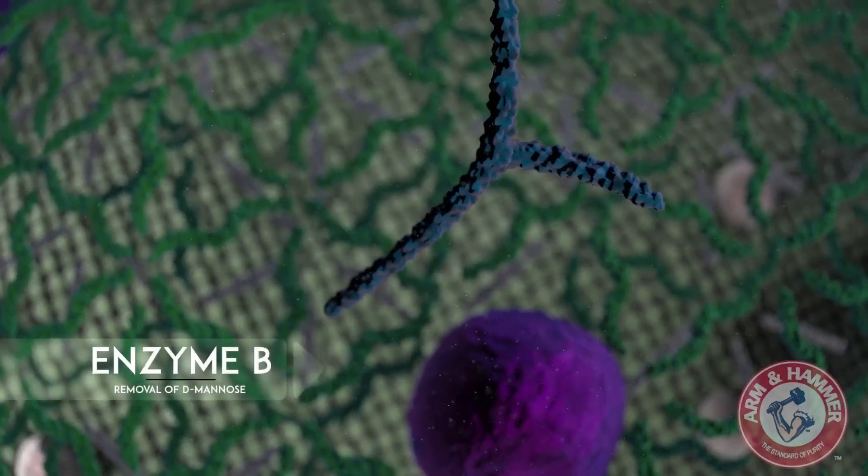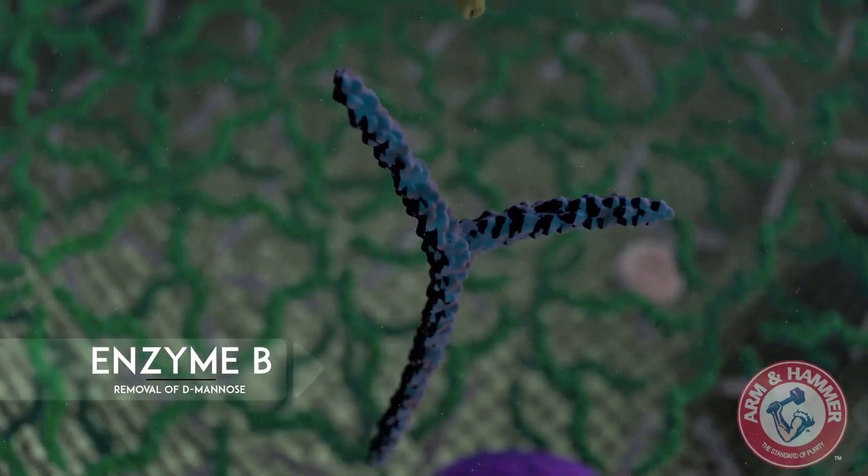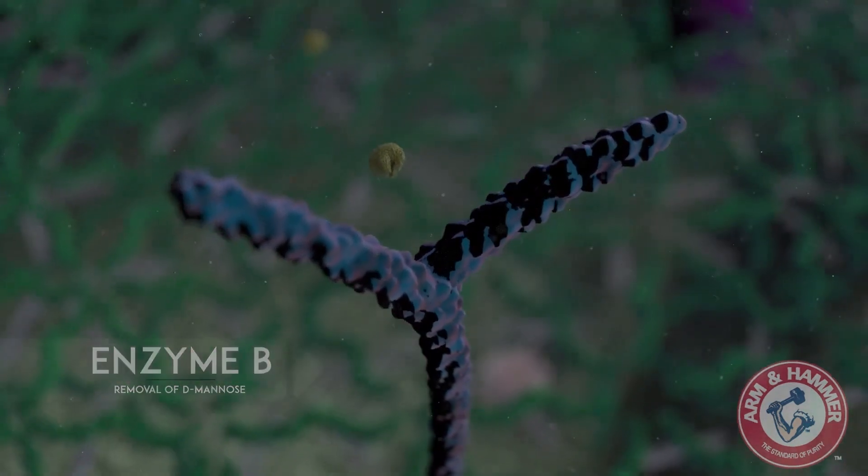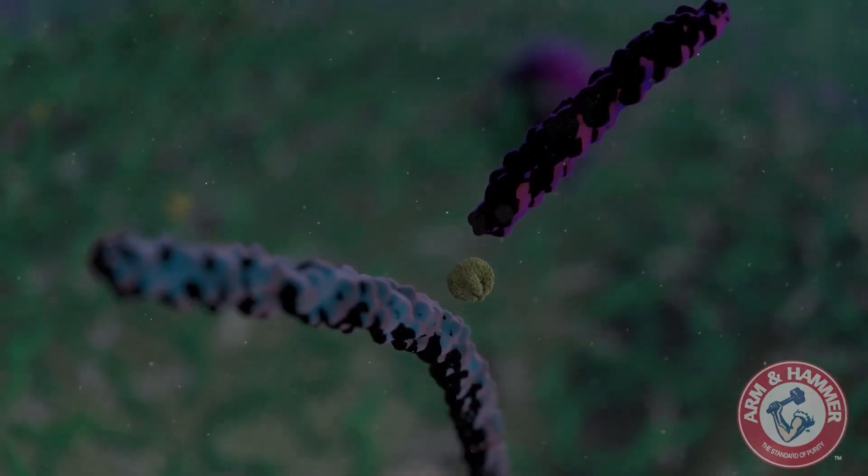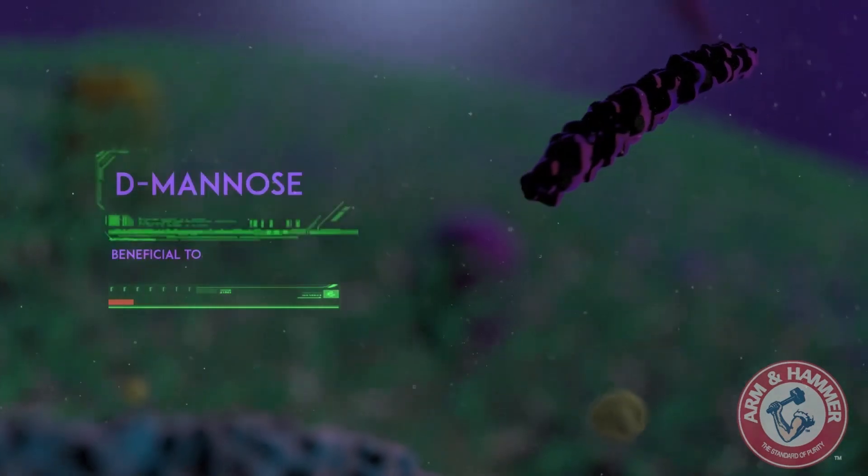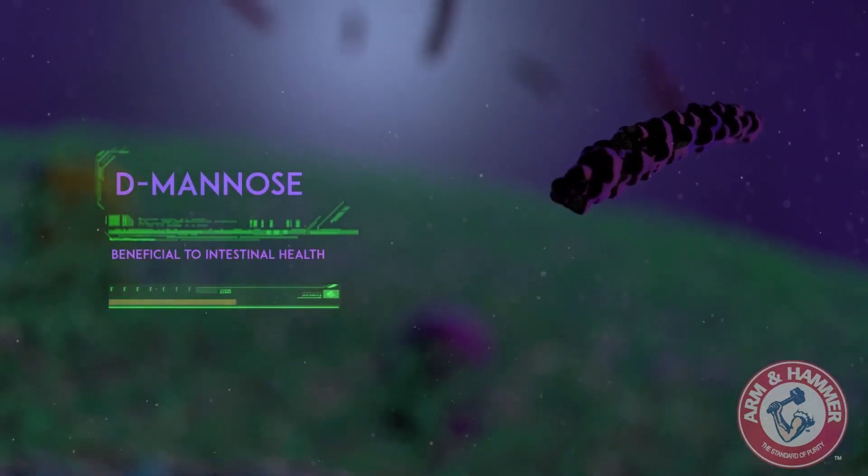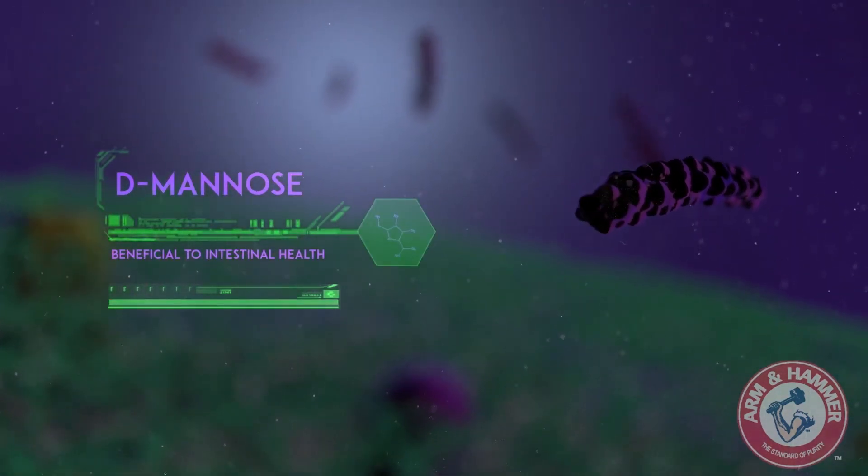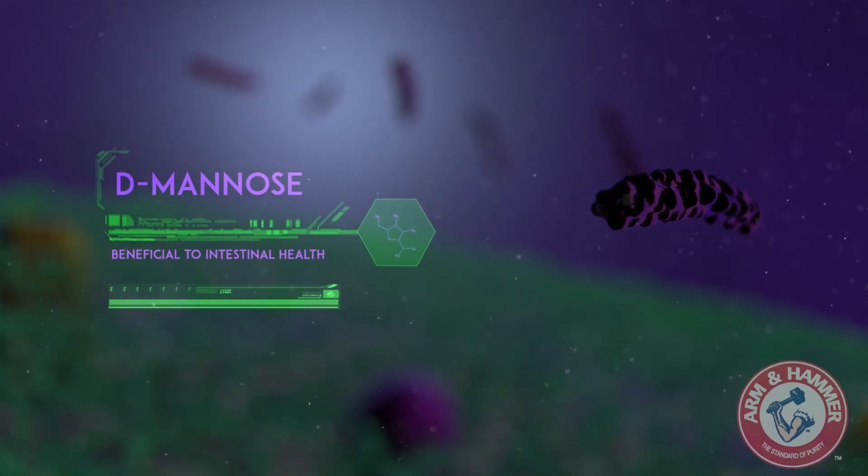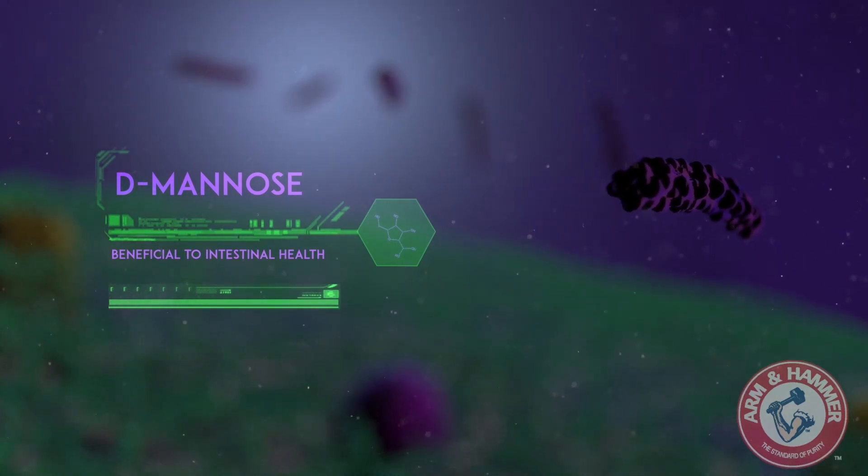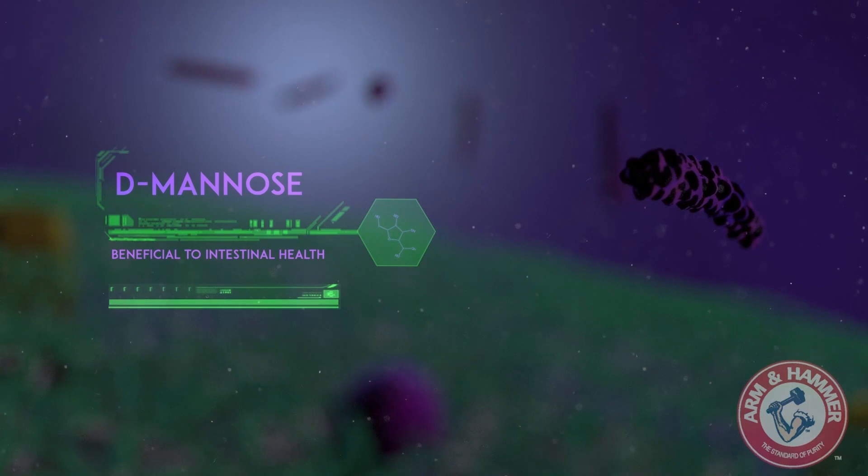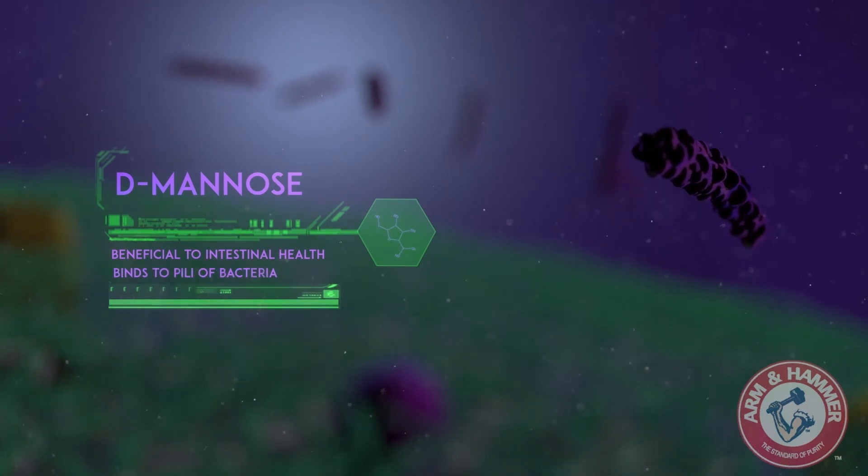Once all mannan oligosaccharide has been unlocked from the cell wall, another specific enzyme breaks some of the MOS into its individual building blocks: D-mannose. The primary benefit of D-mannose is that it feeds the indigenous population of beneficial bacteria in the intestine, which are essential in promoting intestinal health. Secondly, it too has the ability to bind to the pili of pathogenic organisms.